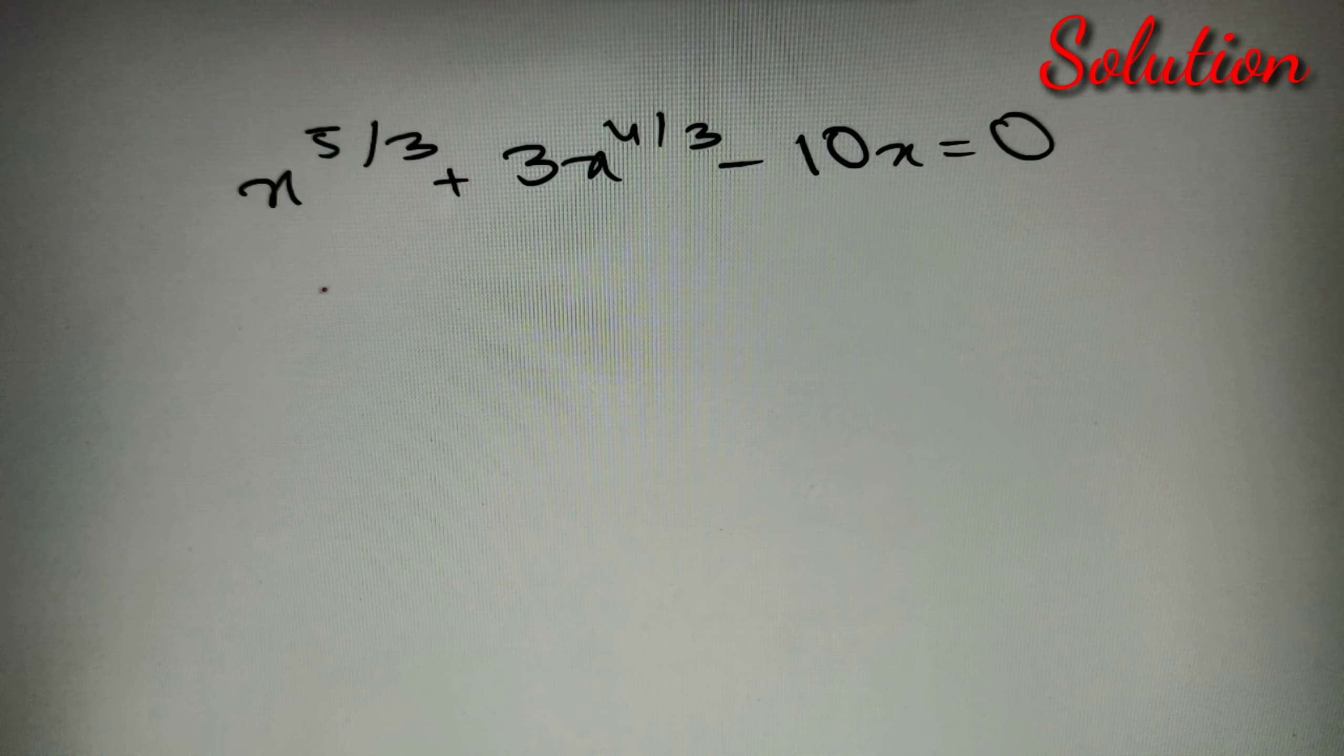According to our given question, we have to find the values of x for the given algebraic equation: x^(5/3) + 3x^(4/3) - 10x = 0.